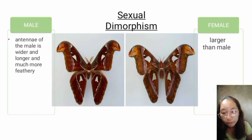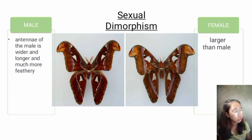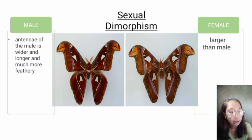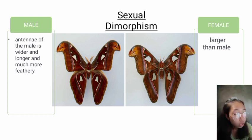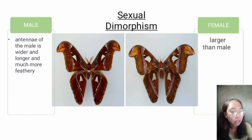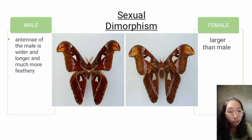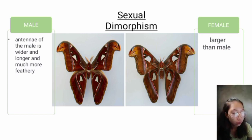Next we have sexual dimorphism. Sexual dimorphism means that male and female differ in various aspects of their body. For example, the wingspan of the male is about 210 to 230 mm, while in the female it is 240 to 250 mm. Another difference is the male antennae — compared to the female's antennae, it is much wider, longer, and more feathery. This enables males to track down the pheromones released by the female during mating.